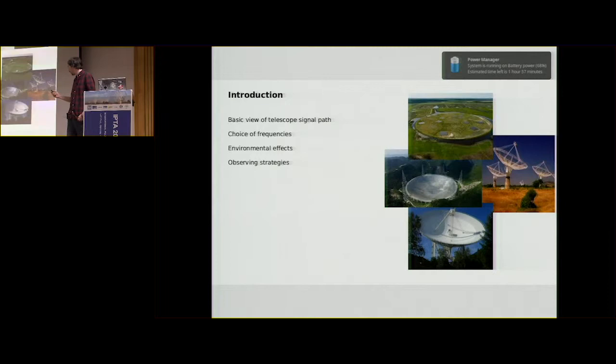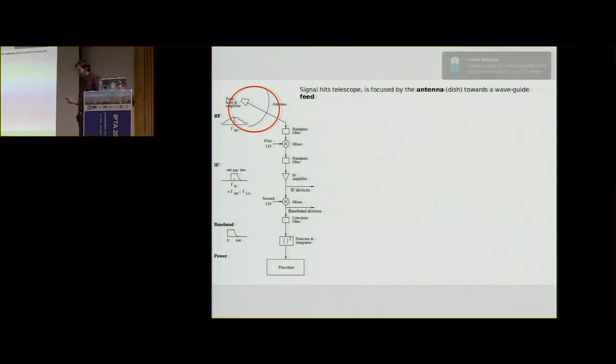Just still getting used to using this pointer. Okay, so we're just going to dive straight in and get some of the technical stuff out of the way. So this is the signal path of the telescope, or the block diagram of what the signal has to travel through.